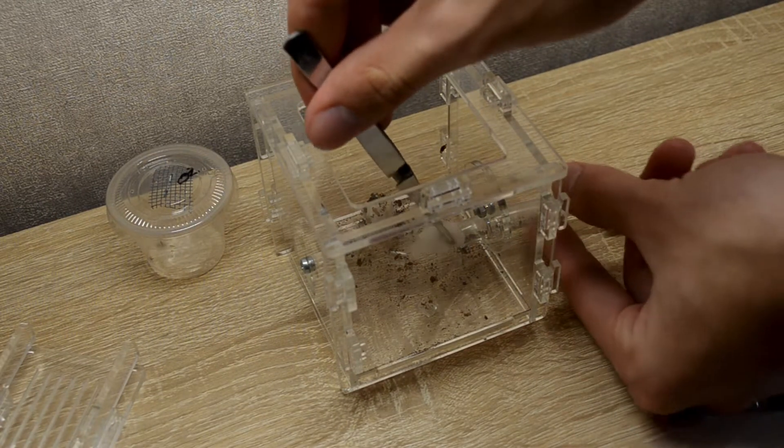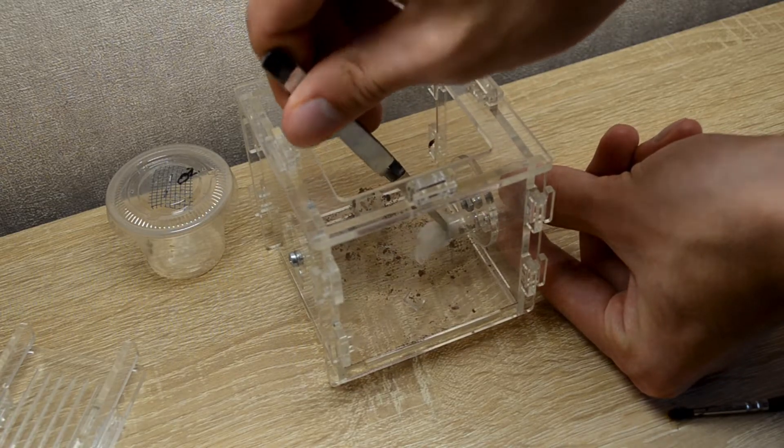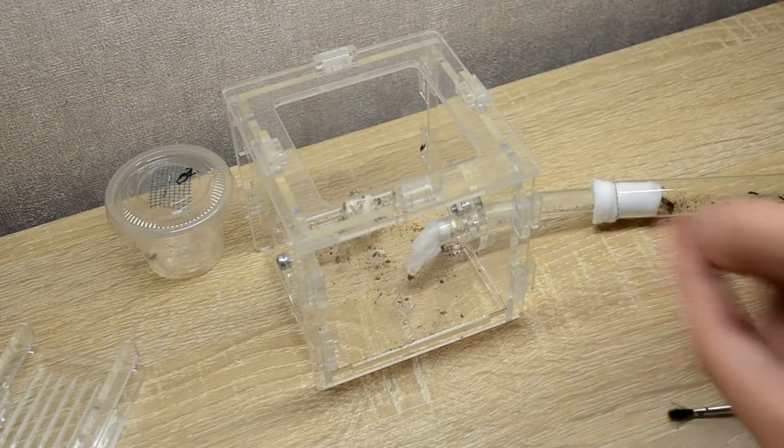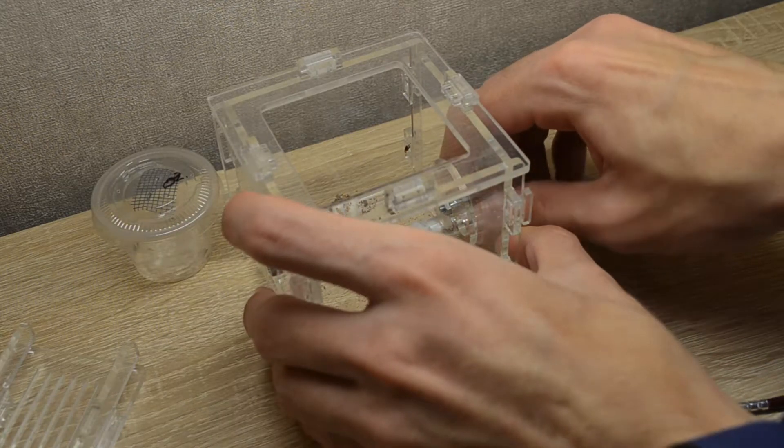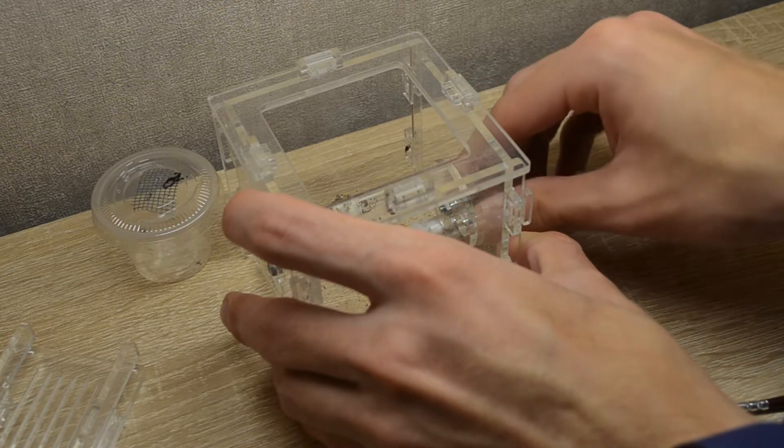Next, you need to plug the cotton tube that connects the incubator and the arena, then pull out the tube and put the ants aside. Then I cleaned up the arena behind the scenes so that there was no dirt.